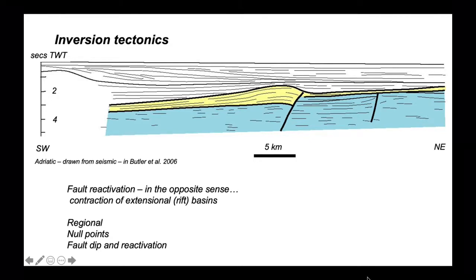Tectonic inversion involves fault reactivation in the opposite sense to which that fault originally occurred. It involves contraction of extensional rift basins. We'll use the regional concept, look at null points, and see how the dip of faults may control how reactivation progresses.